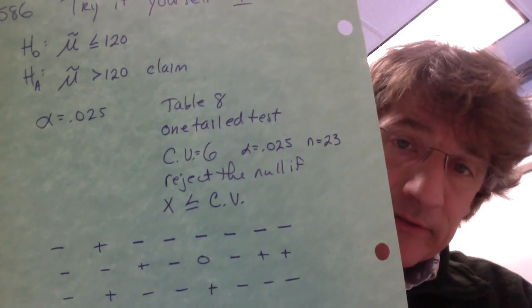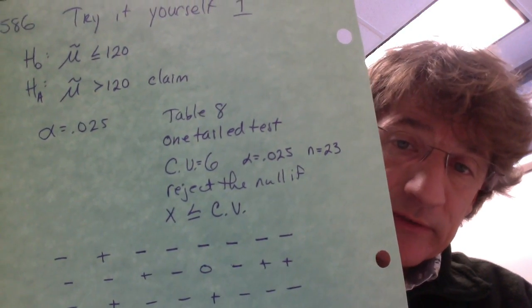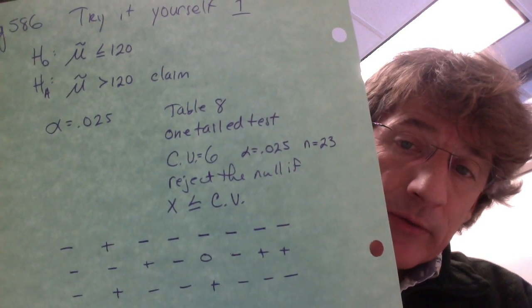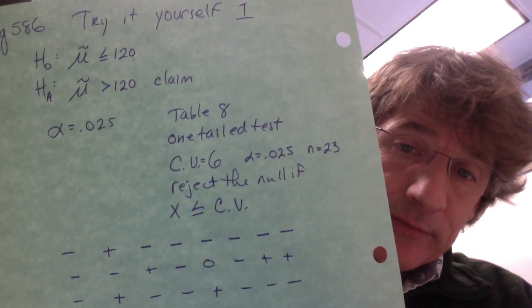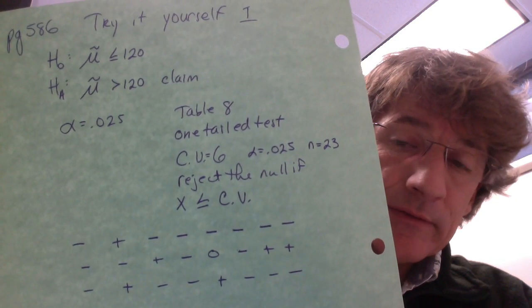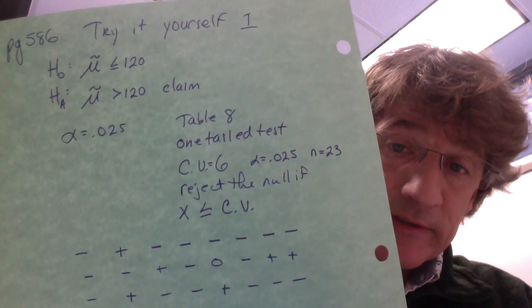Our n is 23, because there are 23 positives and negatives. The 24th is a zero, so we just disregard it.